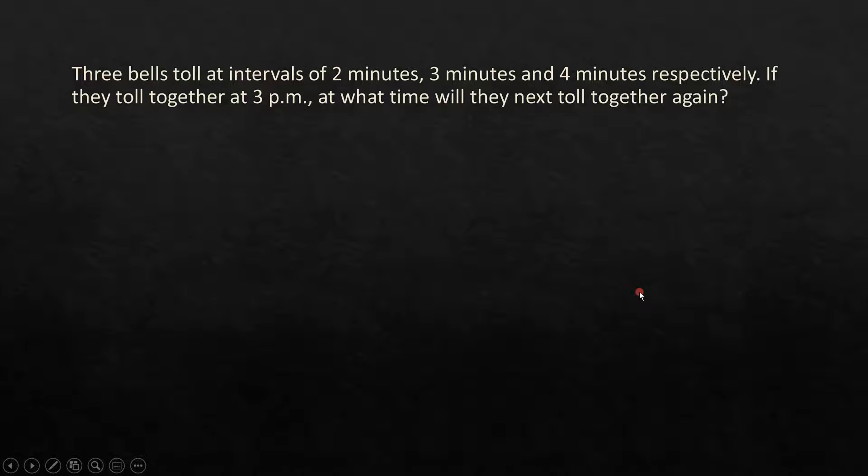Three bells toll at intervals of 2 minutes, 3 minutes, and 4 minutes, respectively. If they toll together at 3 p.m., at what time will they toll next together again? So you see, anytime when we see what time they will next happen, what is the next time that they all come together, what is the next time they all happen at the same time, or when you arrange books, what is the first time when all the three, probably all three stacks are reaching the same height. All these are indications that this is an LCM related problem. So here, for understanding purposes, we can assume that the three bells are A, B, and C.